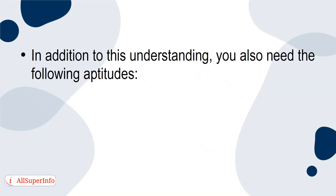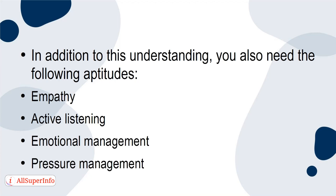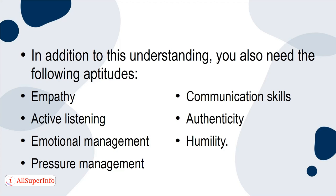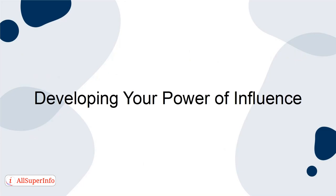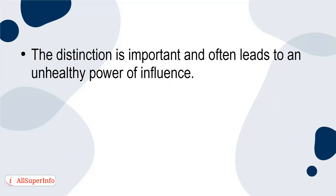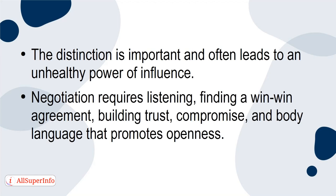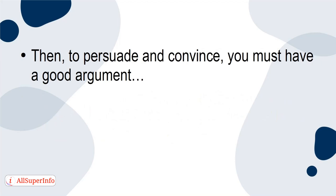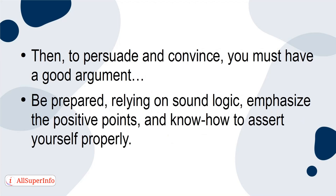In addition to this understanding, you also need the following aptitudes: empathy, active listening, emotional management, pressure management, communication skills, authenticity, and humility. Developing your power of influence. The power of influence in leadership lies in the art of negotiating and finding mutual benefit. Influencing is therefore not about showing authority or manipulating people. Negotiation requires listening, finding a win-win agreement, building trust, compromise, and body language that promotes openness. Then, to persuade and convince, you must have a good argument, be prepared, rely on sound logic, emphasize the positive points, and know how to assert yourself properly.